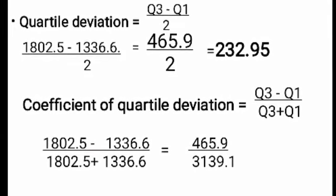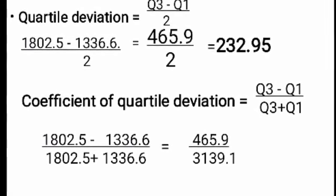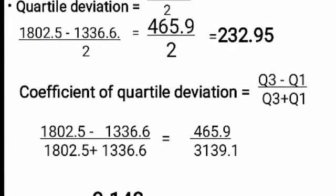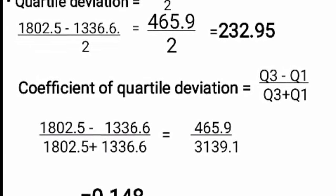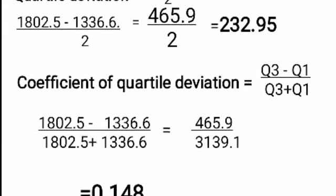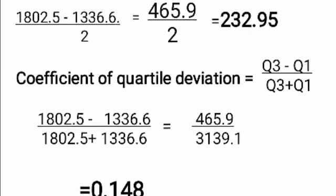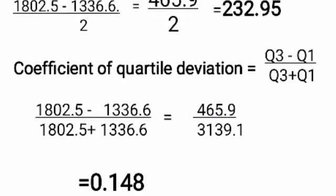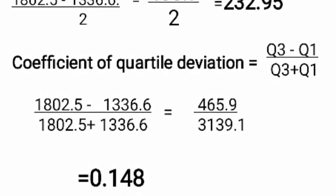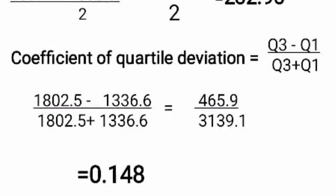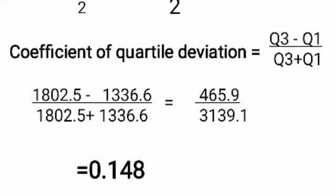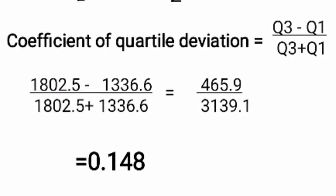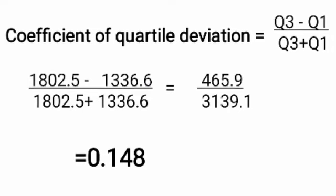The quartile deviation equals Q3 minus Q1 divided by 2, which is 1,802.5 minus 1,336.6 divided by 2, giving approximately 232.95. Then the coefficient of quartile deviation is Q3 minus Q1 divided by Q3 plus Q1, which is (1,802.5 minus 1,336.6) divided by (1,802.5 plus 1,336.6), equal to 465.9 divided by 3,139.1, which equals 0.148. This is the coefficient of quartile deviation.